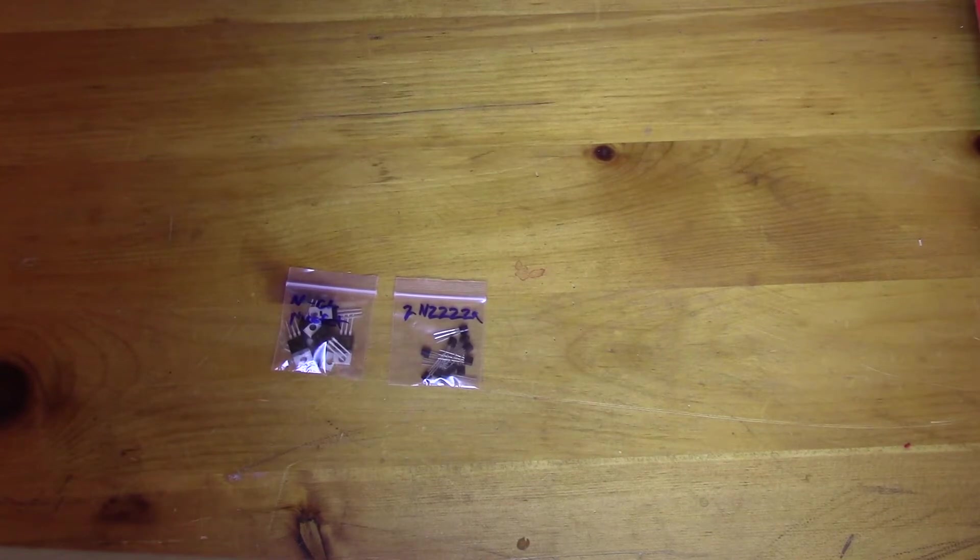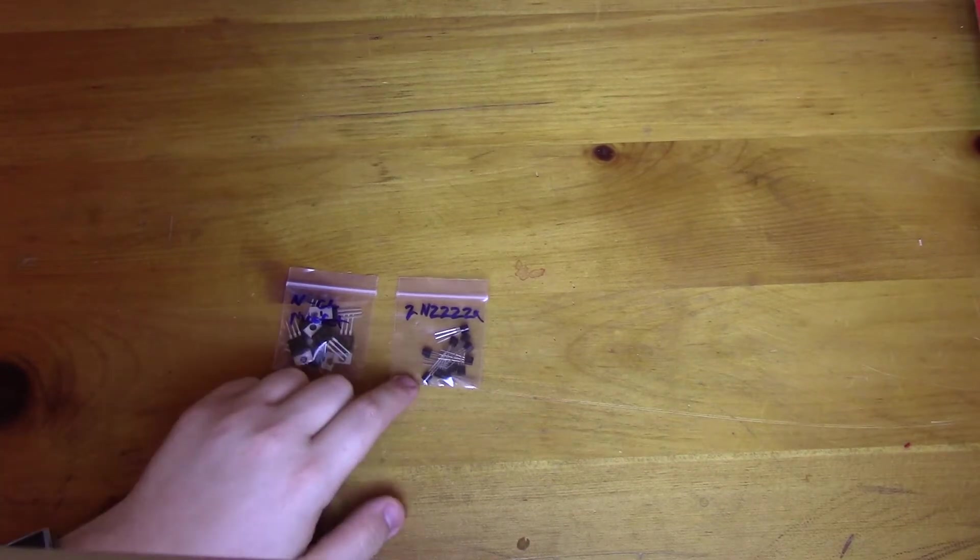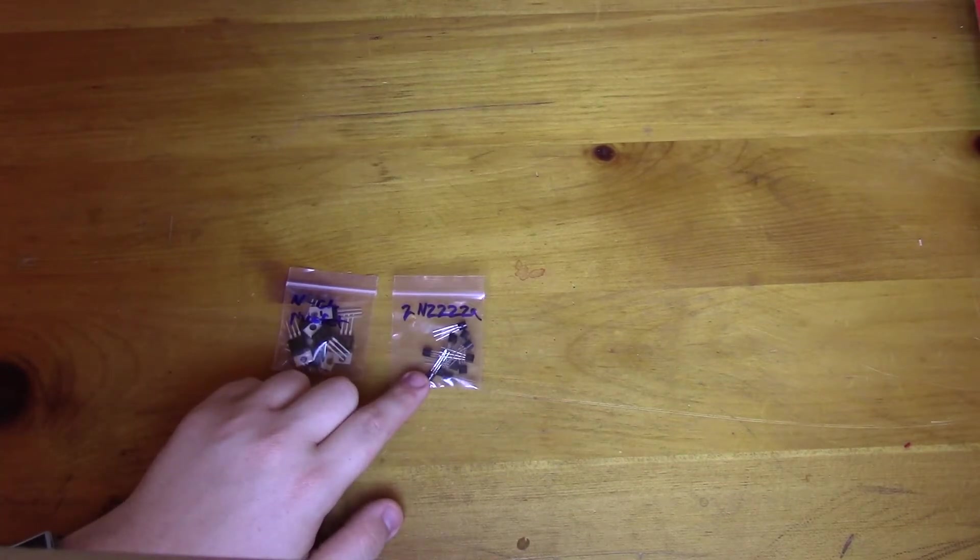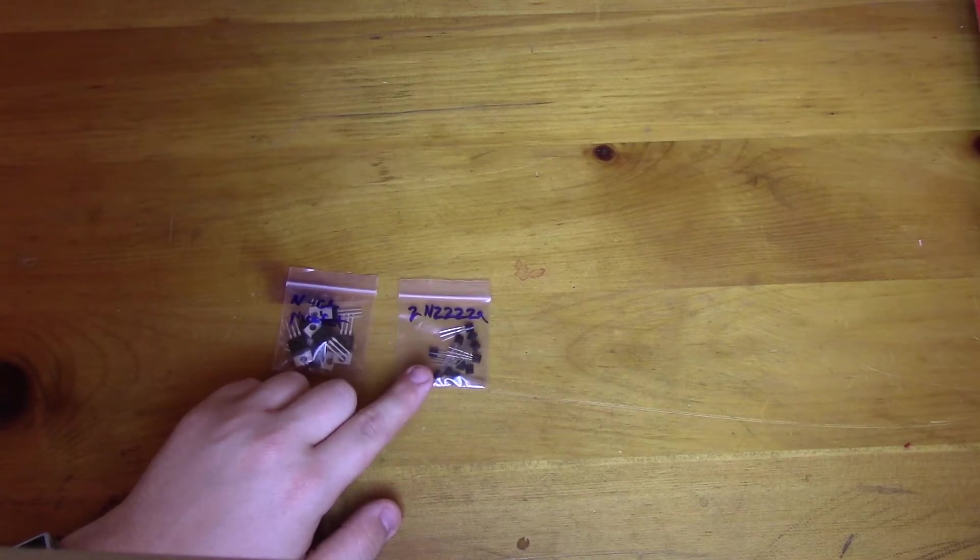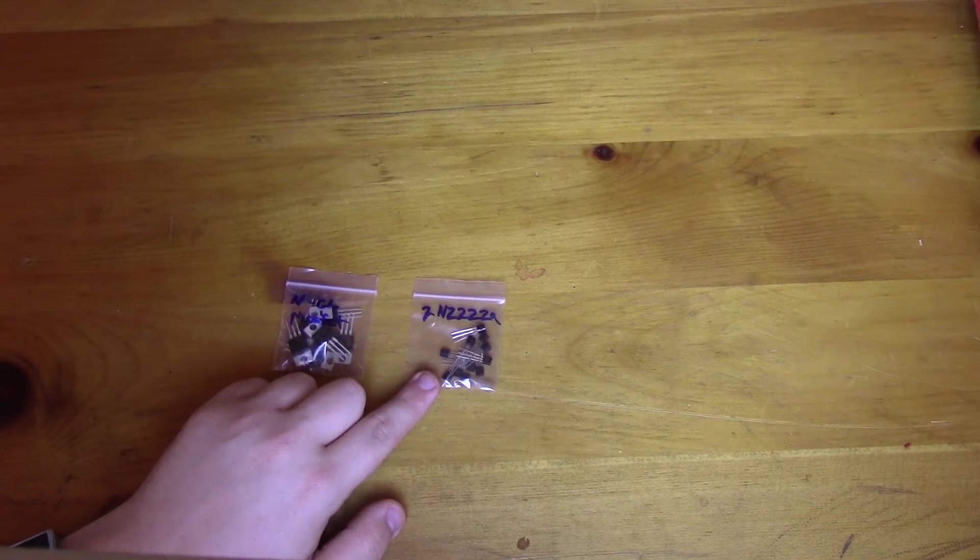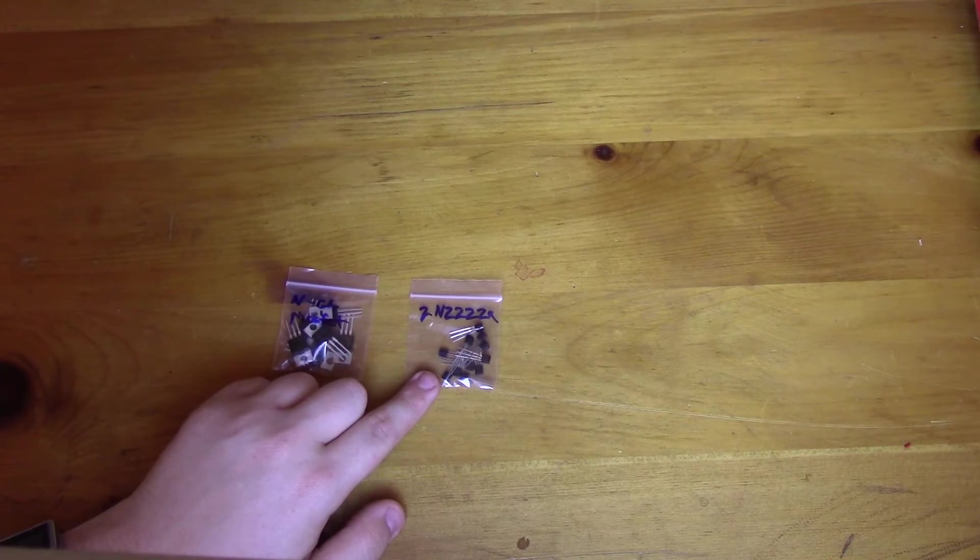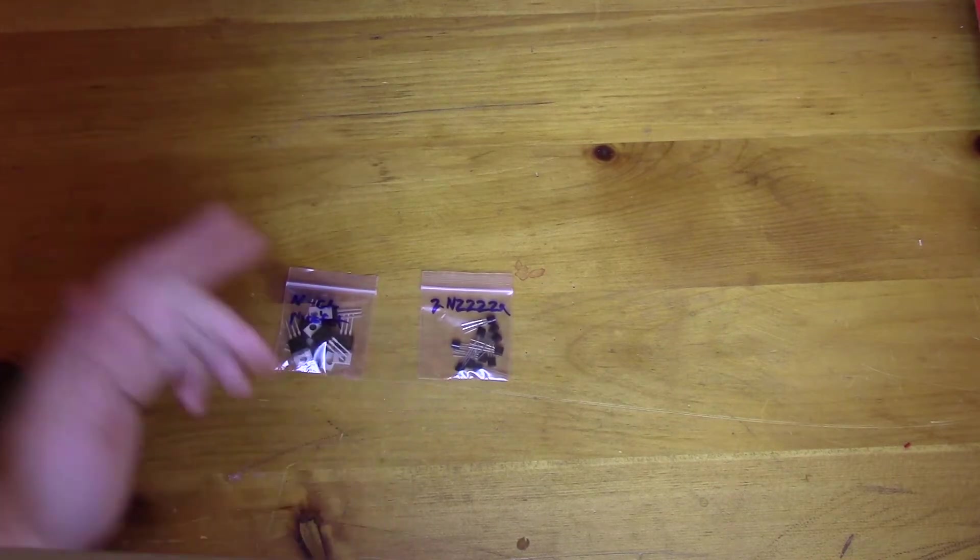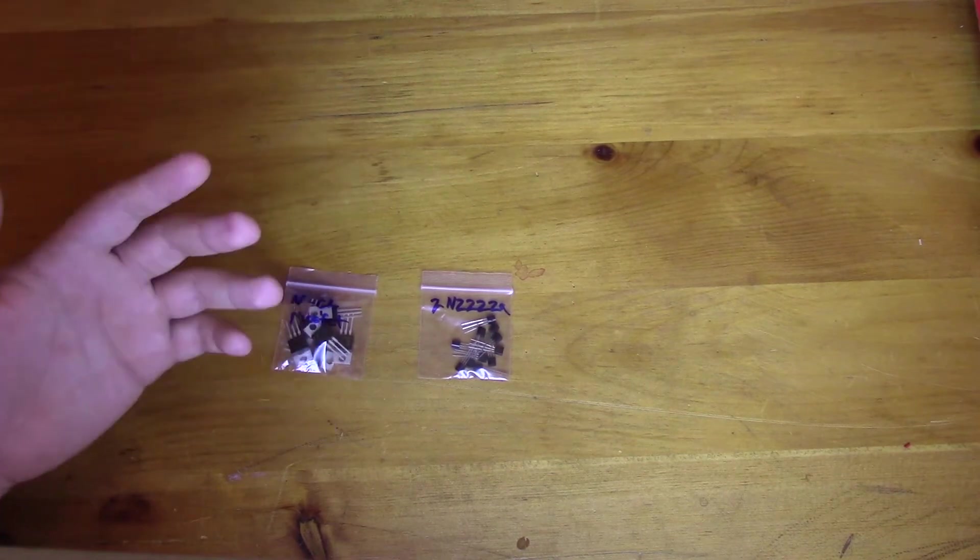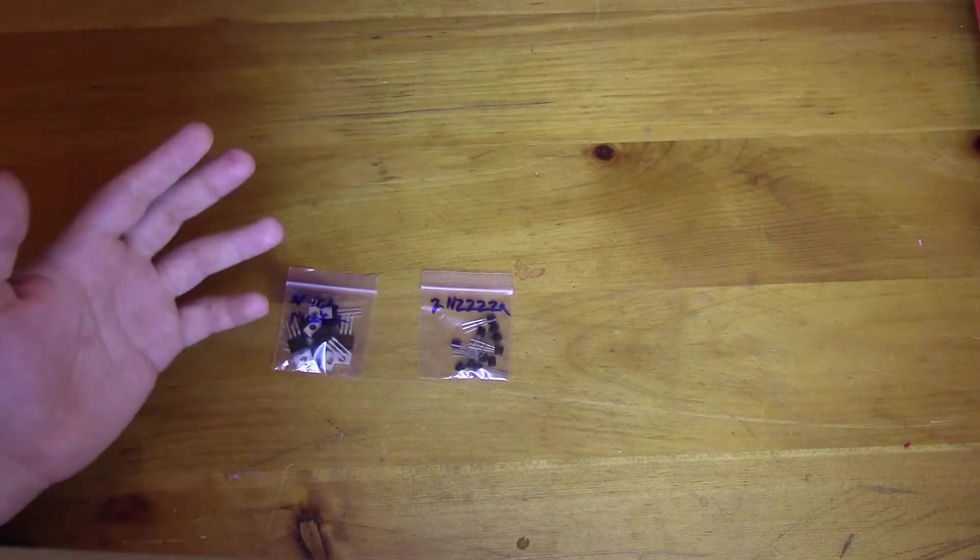And they are wonderful transistors, but they have a lower current capacity than these. So I believe the 2N2222As are rated for either 0.8 or one amp. I can't remember their voltage, but let's face it, most of the time we're caring about the amperage, the current, not so much the voltage on these smaller projects here. Mostly going to be five, maybe 12 volts. That'll handle it.